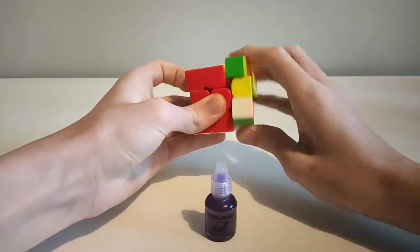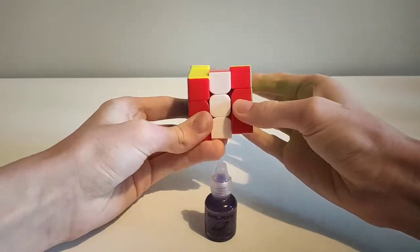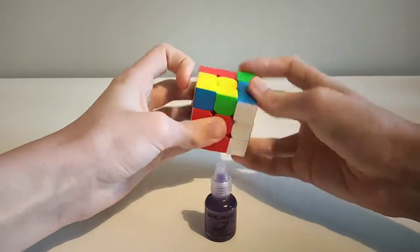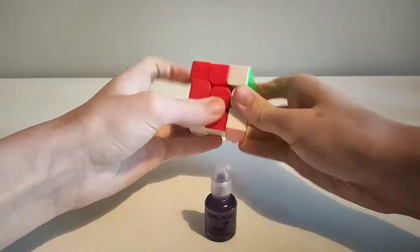Next up we have speedcube shop galaxy. Speedcube shop galaxy is the next step from martian lube. There's a pattern here. So galaxy makes the cube a little bit faster, and a good amount smoother and quieter.